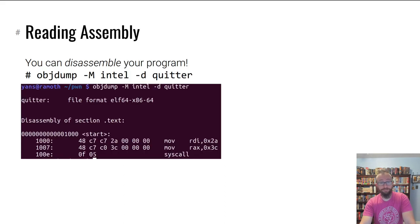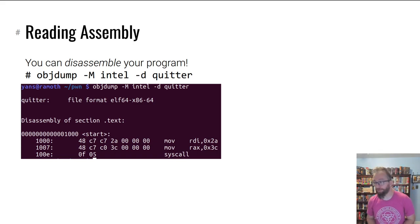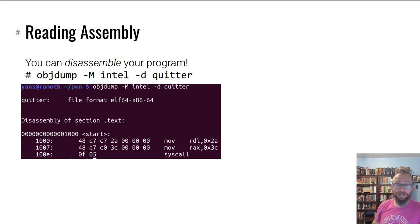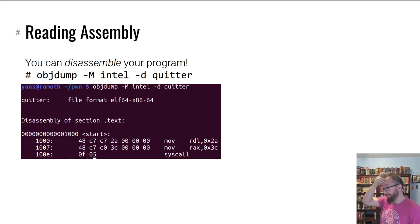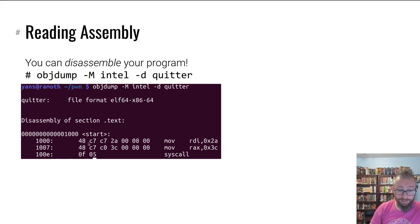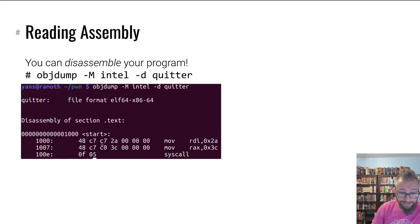You can also get the assembly back out to make sure it properly assembled. There are other cases too, like reading the assembly of programs you didn't write yourself. You can disassemble a program using objdump. Tell objdump you want Intel disassembly syntax — because AT&T is the unfortunate default — and here is your quitter program. These are the upper assembly instructions: this is 42 in hex, this is 0x16 — the syscall number for exit — and this is the first argument to exit.